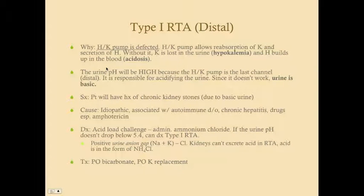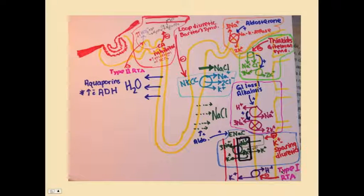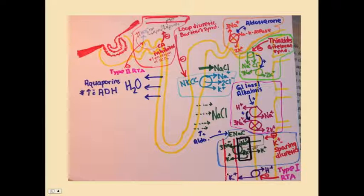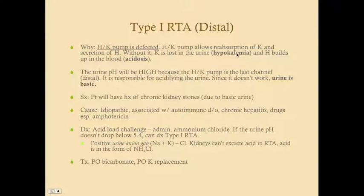In type 1 RTA, the hydrogen-potassium pump is defective. If this pump is defective, we can't pull hydrogen ions out of the blood and can't reabsorb potassium ions. Naturally, if we can't excrete hydrogen, we get acidemia — a metabolic acidosis from hydrogen accumulating in the blood. If we can't reabsorb potassium, we won't get potassium back into the blood, resulting in hypokalemia. So knowing that the hydrogen-potassium pump is defective in type 1 RTA explains both the hypokalemia and the metabolic acidosis.